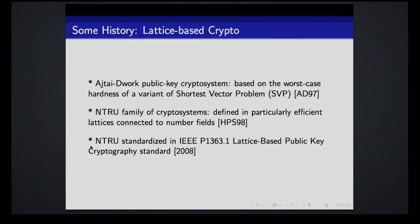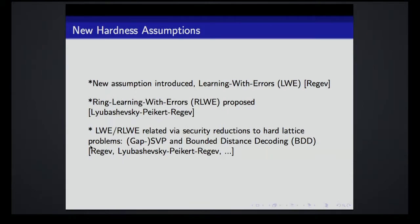Homomorphic encryption has been one of the very nice motivating applications for using lattice-based crypto. We heard an extensive talk on history yesterday from Daniela. The abbreviated history: the Ajtai-Dwork public key cryptosystem from almost 20 years ago; the NTRU family proposed by Hoffstein, Peiffer, and Silverman, standardized around 2008. New hardness assumptions — new compared to RSA — that make some lattice crypto systems possible: Learning With Errors and Ring Learning With Errors, originally proposed by Regev and by Lyubashevsky, Peikert, and Regev respectively, with security reductions to hard lattice problems like GAP-SVP and bounded distance decoding.